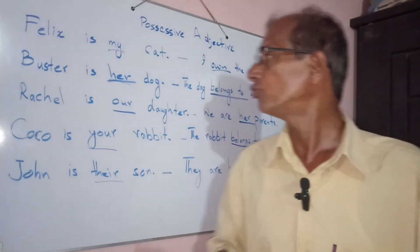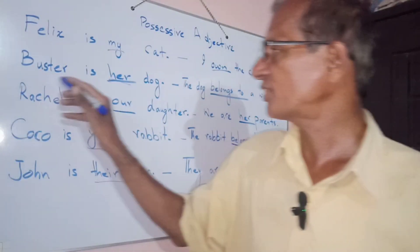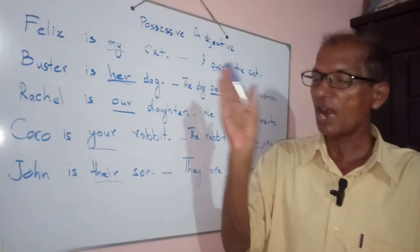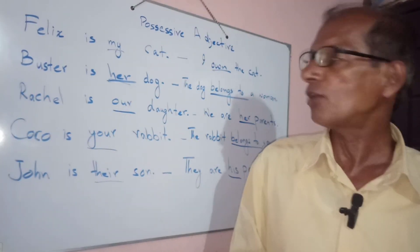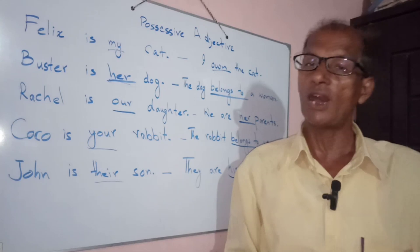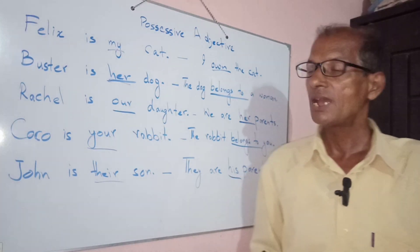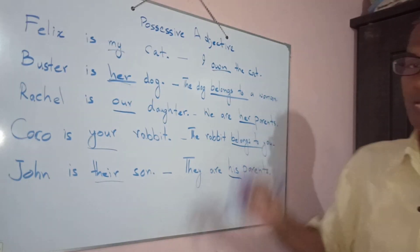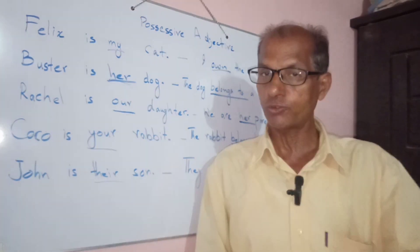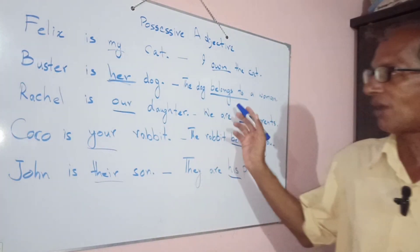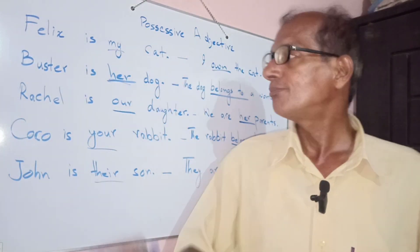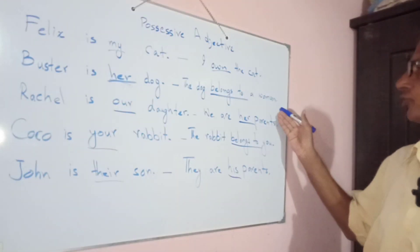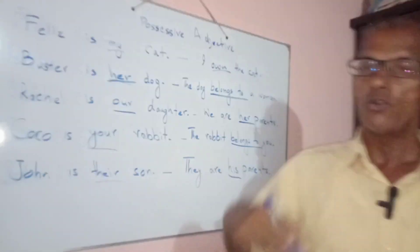Buster is her dog. Buster is her dog — Buster uska kutta hai. Here 'her' is showing that the dog belongs to a woman. That's why here we use 'her'. Buster is her dog — the dog belongs to a woman.